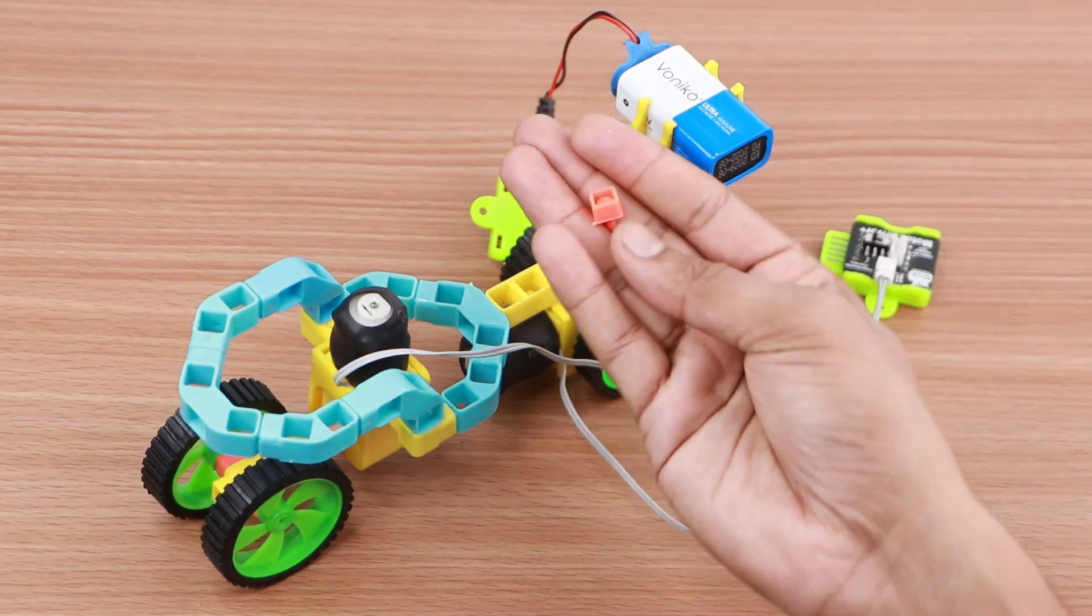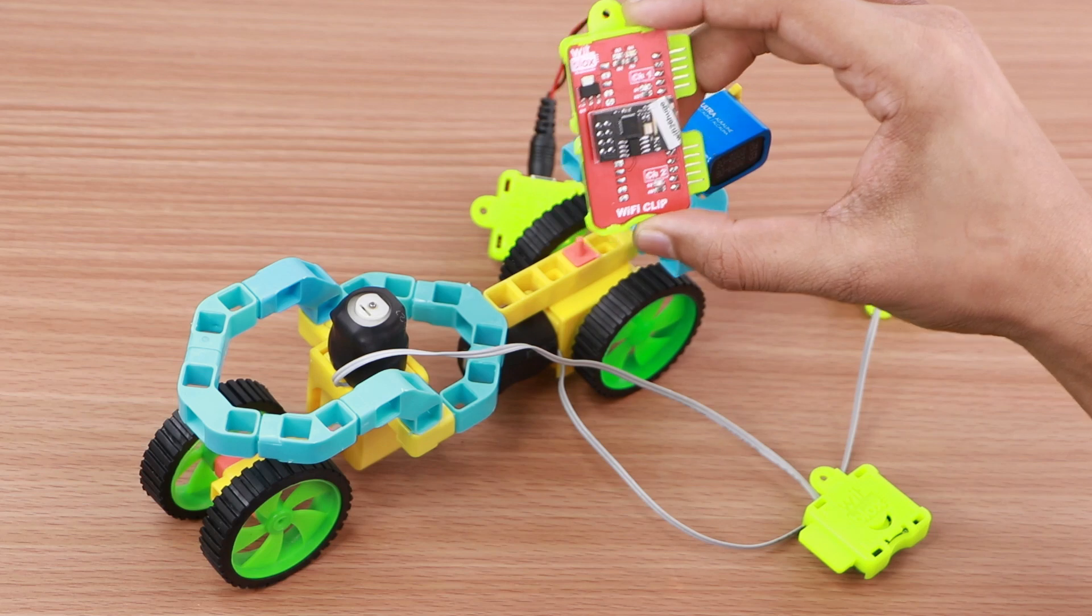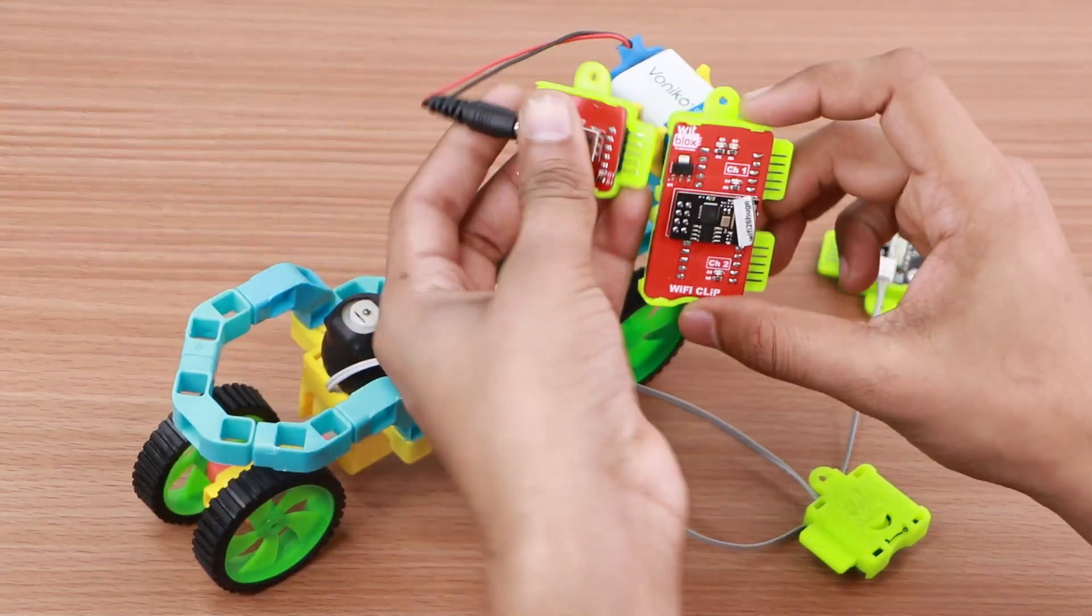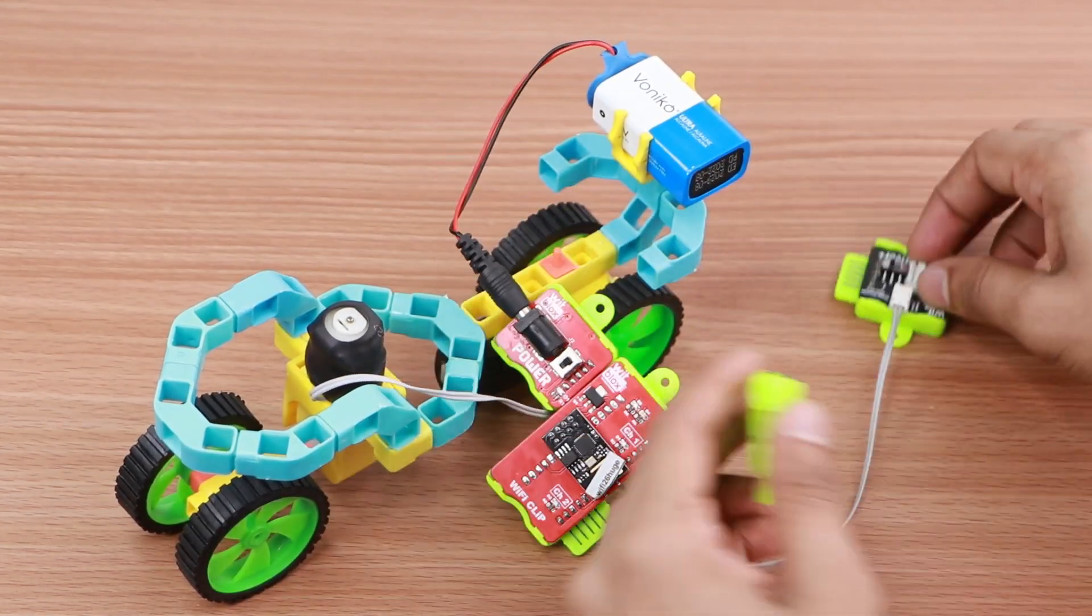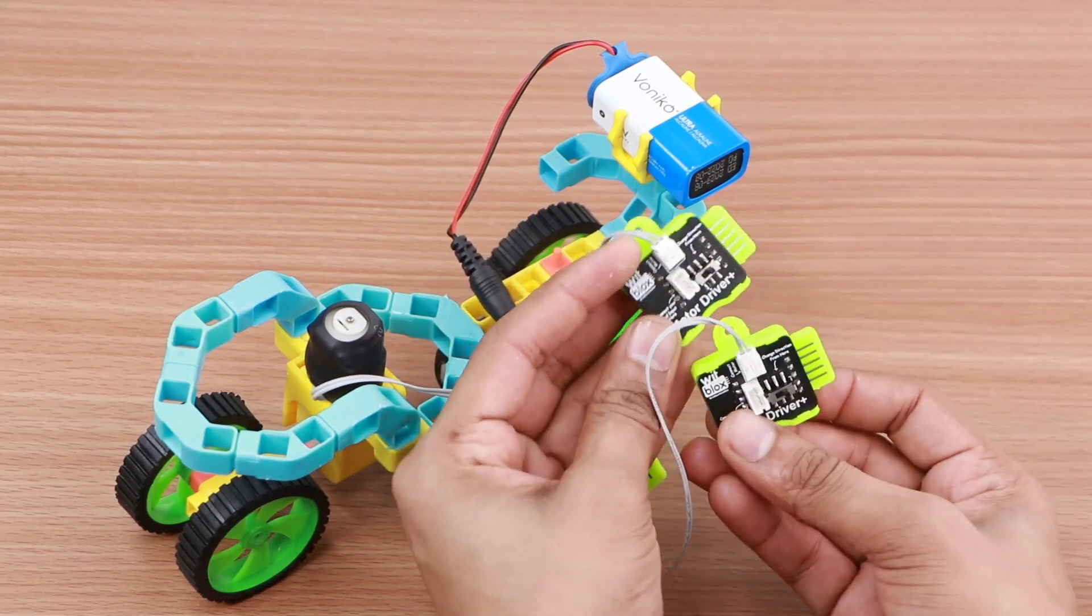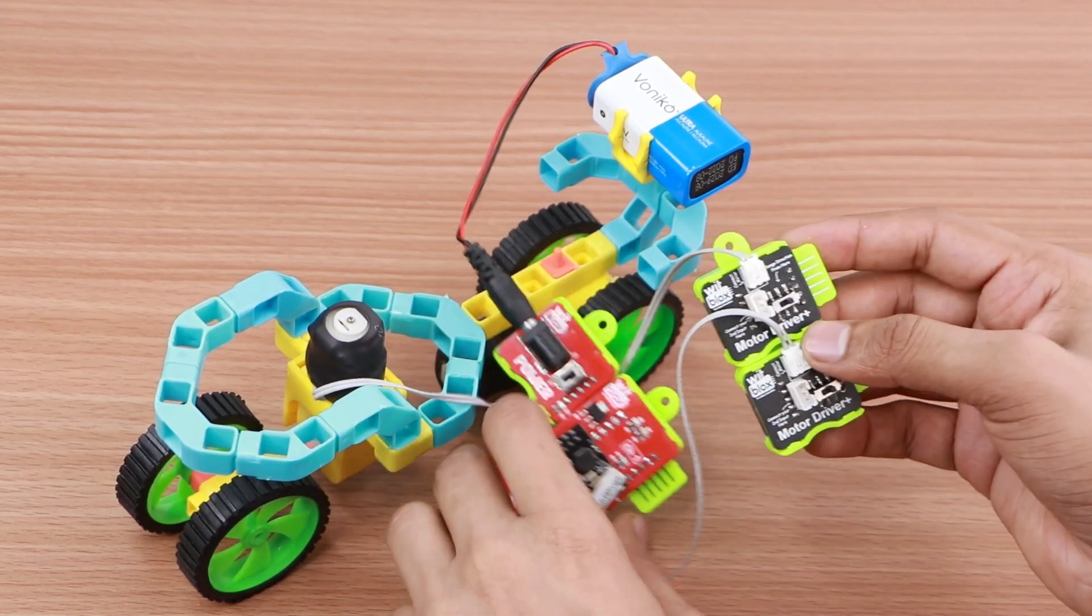Attach one blocks holder to the car base to keep the blocks in place. Now let's build the logic of the Whitmobile robot. Connect the power blocks to the Wi-Fi two-channel blocks. Join the motor driver blocks to each other via the notch on the shell, and then connect them to the Wi-Fi two-channel blocks to complete the logic.